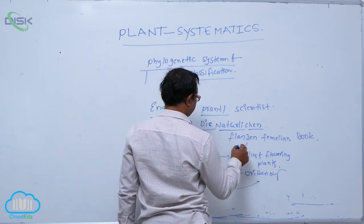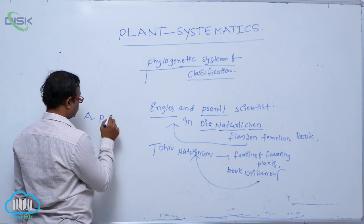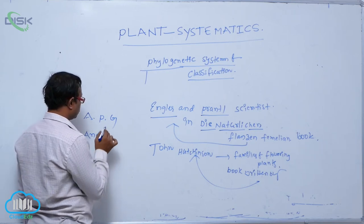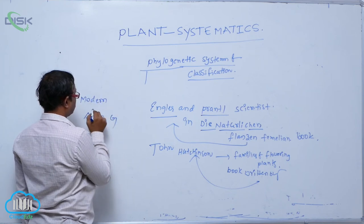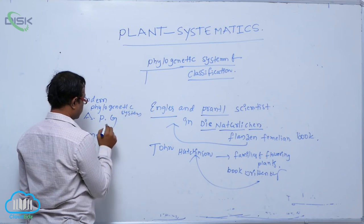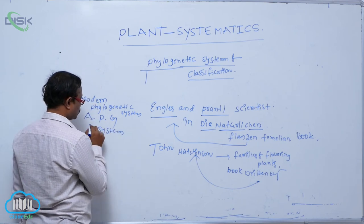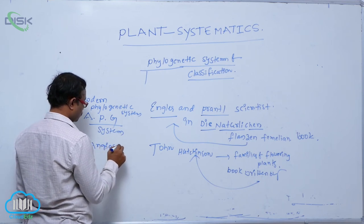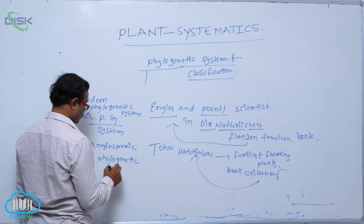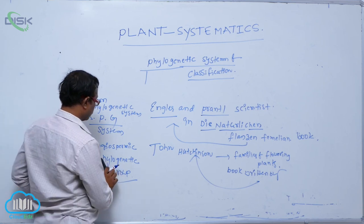After Engler and Prantl's 'Die Natürlichen Pflanzenfamilien', the APG system came. Nowadays the modern phylogenetic system of classification is the APG system, where APG means Angiosperm Phylogenetic Group. This is known as the modern phylogenetic system of classification.